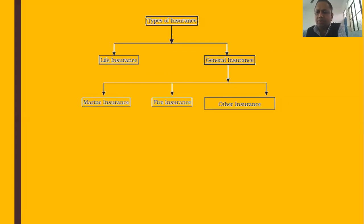Life insurance is related to two types of risk: first, the risk of dying too early; and second, the risk of dying too late. Generally, people take life insurance when they fear dying too early, to provide financial support to their family. Sometimes people take life insurance to get financial support and economic independence during old age.